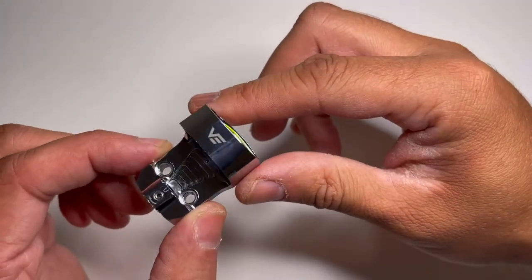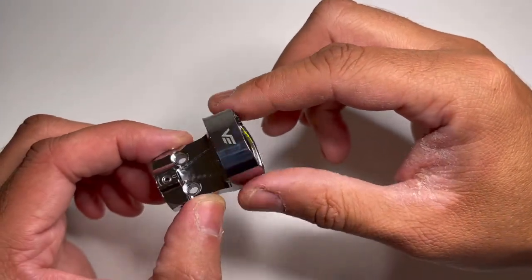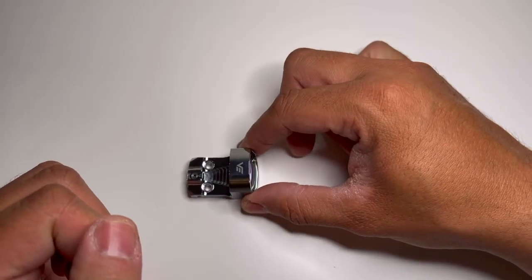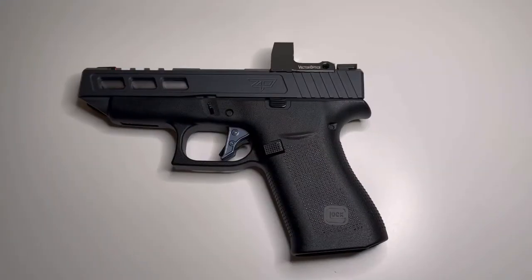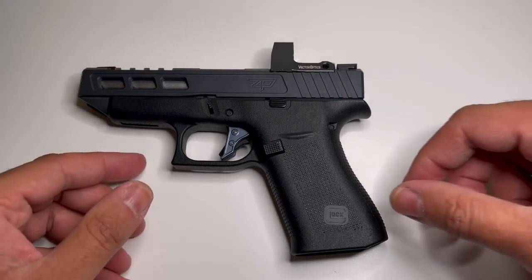Nice Vector logo there. So let's go ahead and put this down and get it mounted on a pistol to see what it looks like. Okay everyone, we got this mounted on a custom Glock 48 to show you what this looks like. This is the auto brightness chrome plated red dot optic SCRD-54.